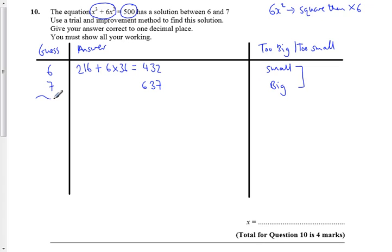My answer is between 432 and 637 - they sandwich the 500 in between. So I'm going to wrap my sandwich up in cling film and move on to the decimals. 6.5³ + 6 times 6.5².